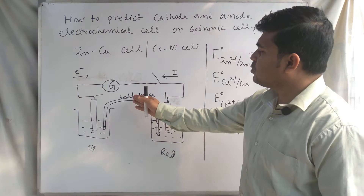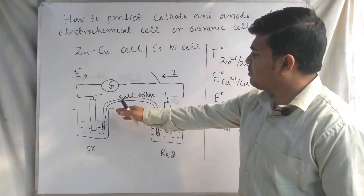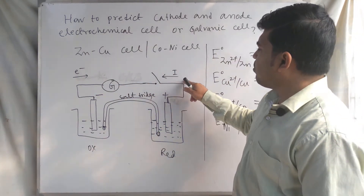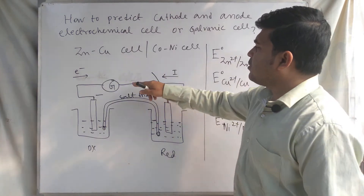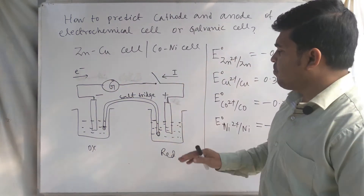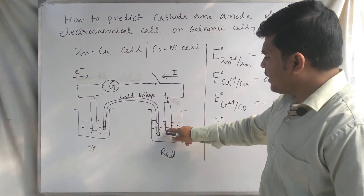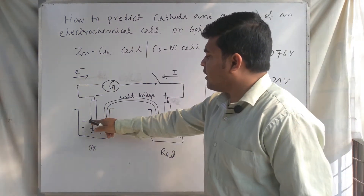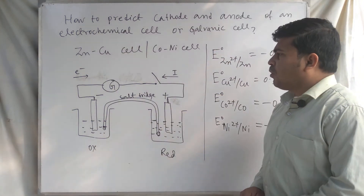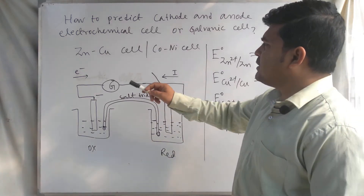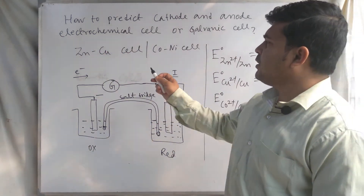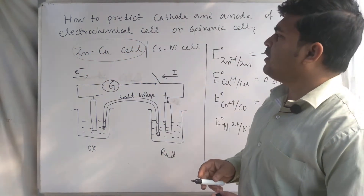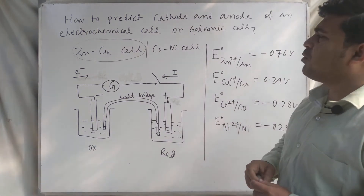The salt bridge is an inverted U-shaped tube. The two beakers are connected by the salt bridge, completing the circuit. There is a galvanometer, and we can see the direction of flow of current and the direction of flow of electrons. A metal electrode is taken with its aqueous electrolyte solution. Suppose we need to determine which one is cathode and which one is anode in the case of a zinc and copper cell.